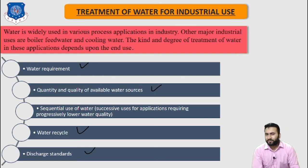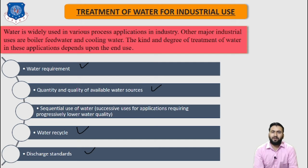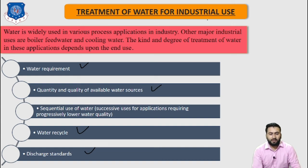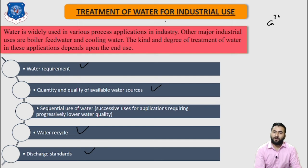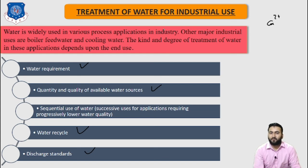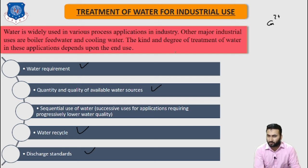Now let us discuss about internal treatment. Internal treatment is designed to modify the properties of water for specific applications. Examples of internal treatment include: reduction of dissolved oxygen with hydrogen sulfide; addition of cleaning agents to react with Ca²⁺ (hardness) and prevent calcium deposits; addition of scale inhibitors to disperse scale; addition of inhibitors to prevent corrosion; addition of chemicals to adjust pH; and use of disinfectants for food processing to prevent bacterial growth.